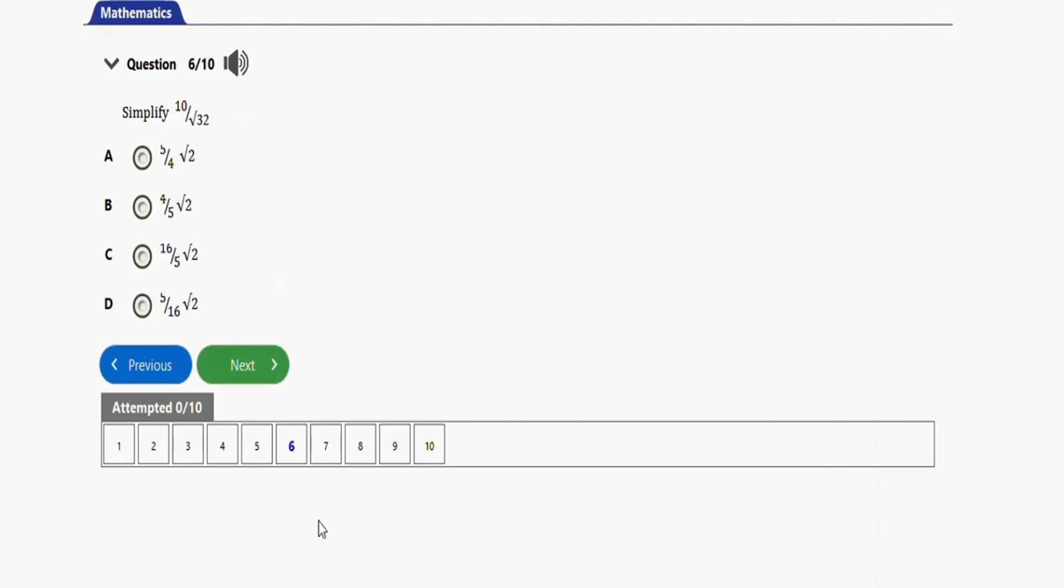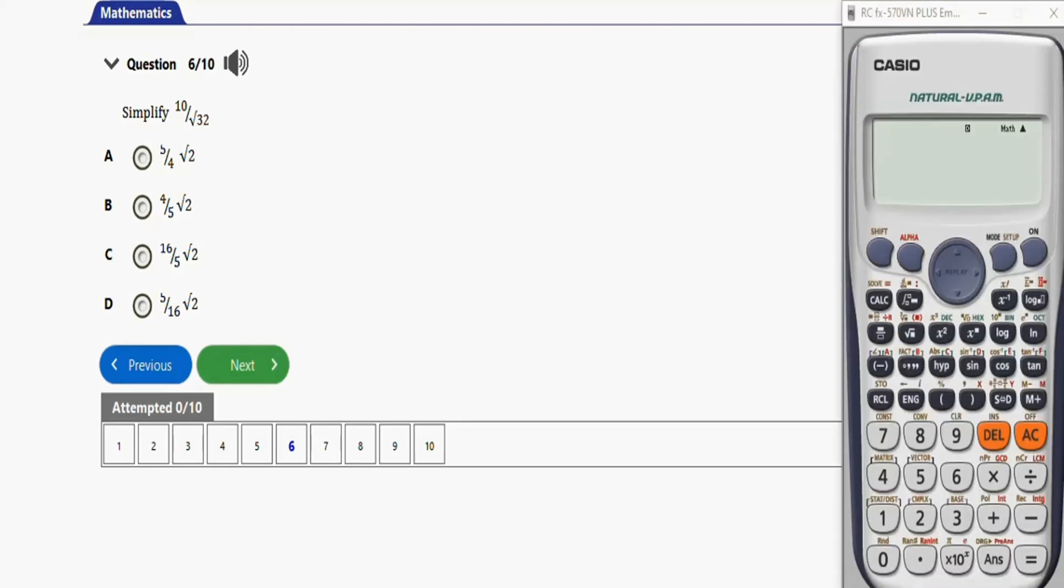The next question says simplify this. To solve this, use the fraction button. We have 10 over √32, press equal. We have it to be 5√2 over 4. So the right option is option A, 5√2 over 4.